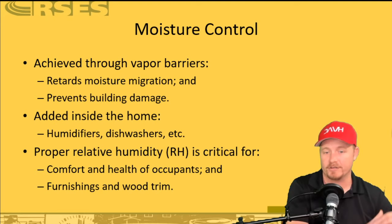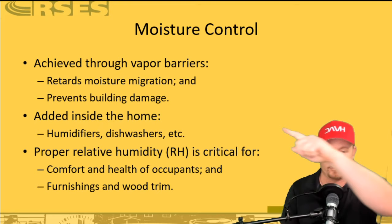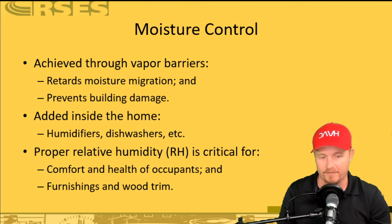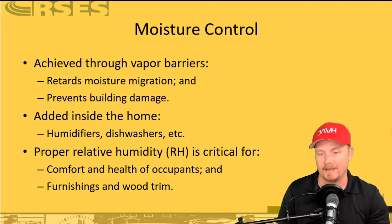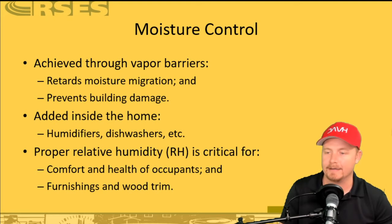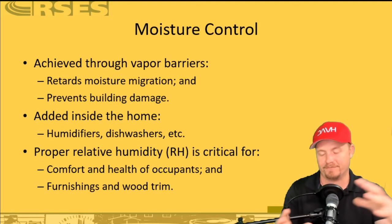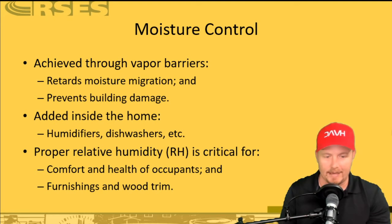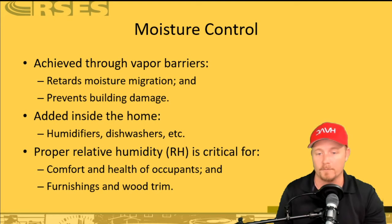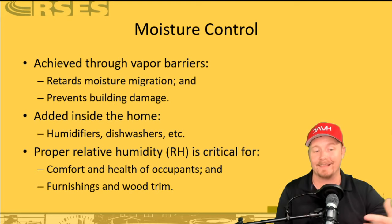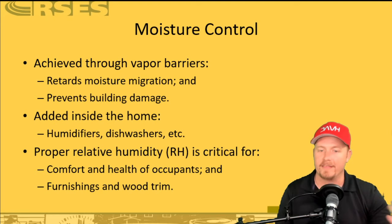We control moisture through things like vapor barriers, and also sources added from inside the home like humidifiers and dishwashers. Having good vapor barriers, good windows and doors with proper seals — those are all factors that help control humidity as it enters the space. Inside the home, a dryer is a pretty significant source of moisture if it's not vented properly. You see a lot of those flexible dryer vents that people use; a lot of times they'll be leaking or not connected properly. If that spills into the laundry room, that's a big factor. Bath fans are another big source — if people aren't running their bath fans during and after showers, that's a contributing factor.